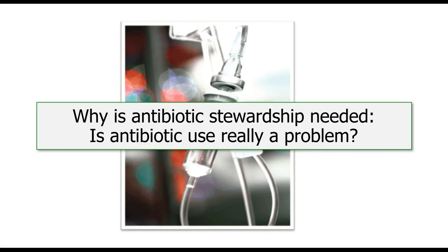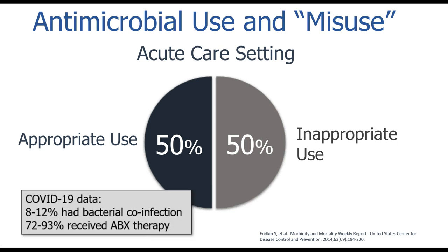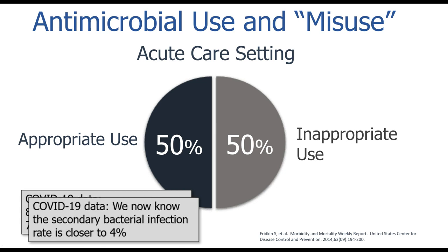Why is antibiotic stewardship needed? The CDC estimates that up to half of the antibiotics used in the acute care setting are considered inappropriate — and this number has been out there for more than 20 years. Looking at COVID data, only 8% to 12% of patients had a bacterial co-infection, yet 72% to 83% received antimicrobial therapy. The secondary bacterial infection rate is actually closer to 4%, so we continue to overuse antibiotics.